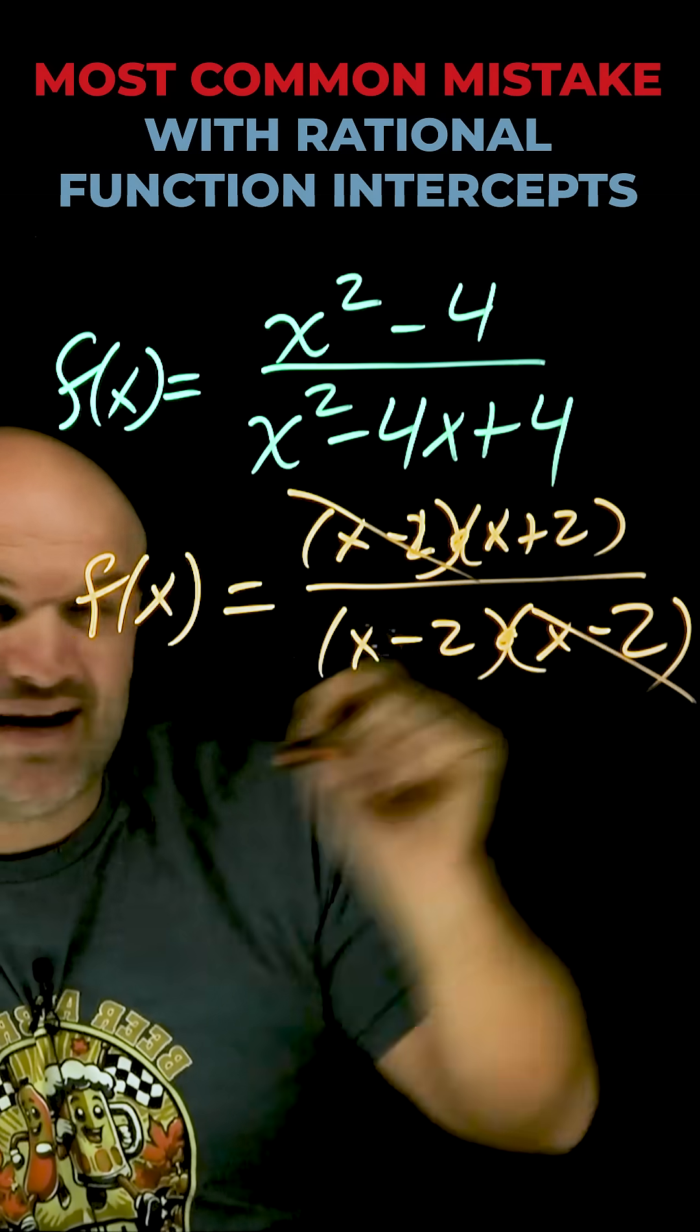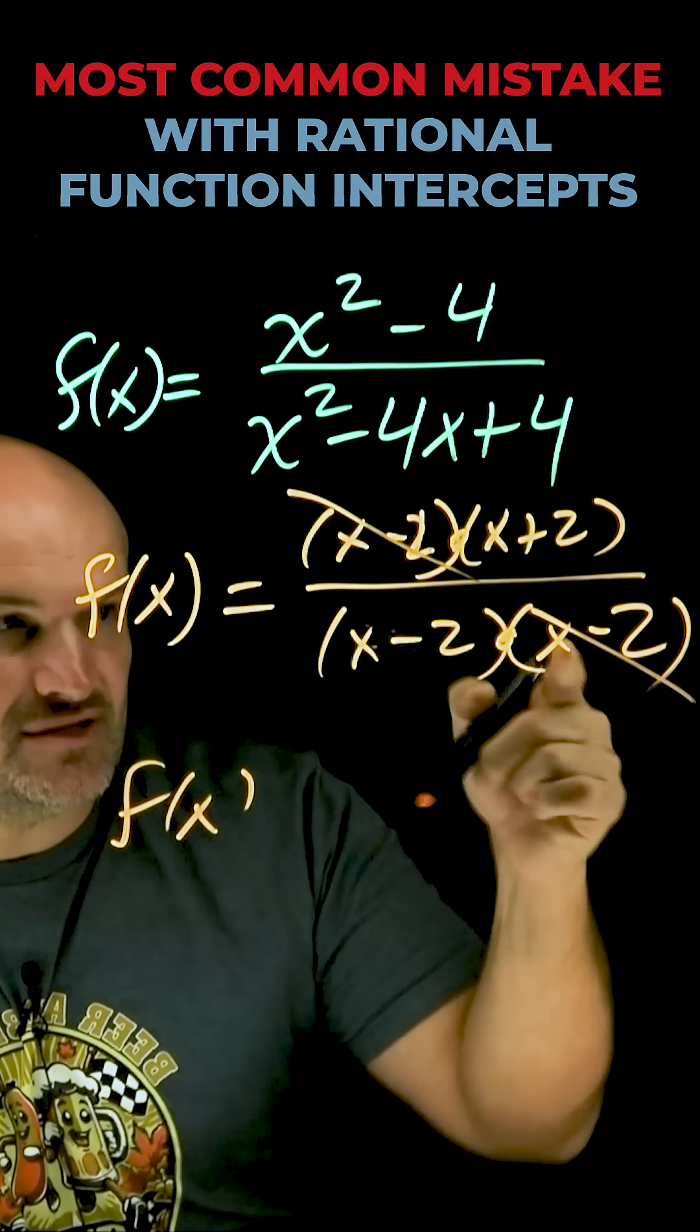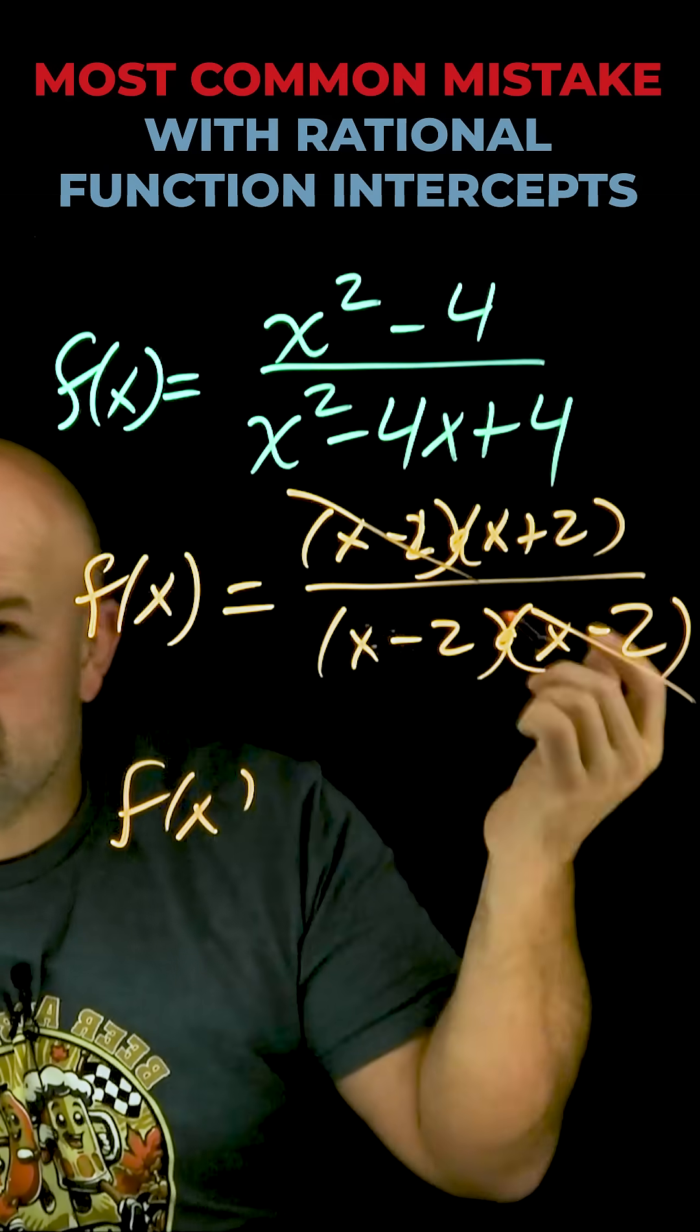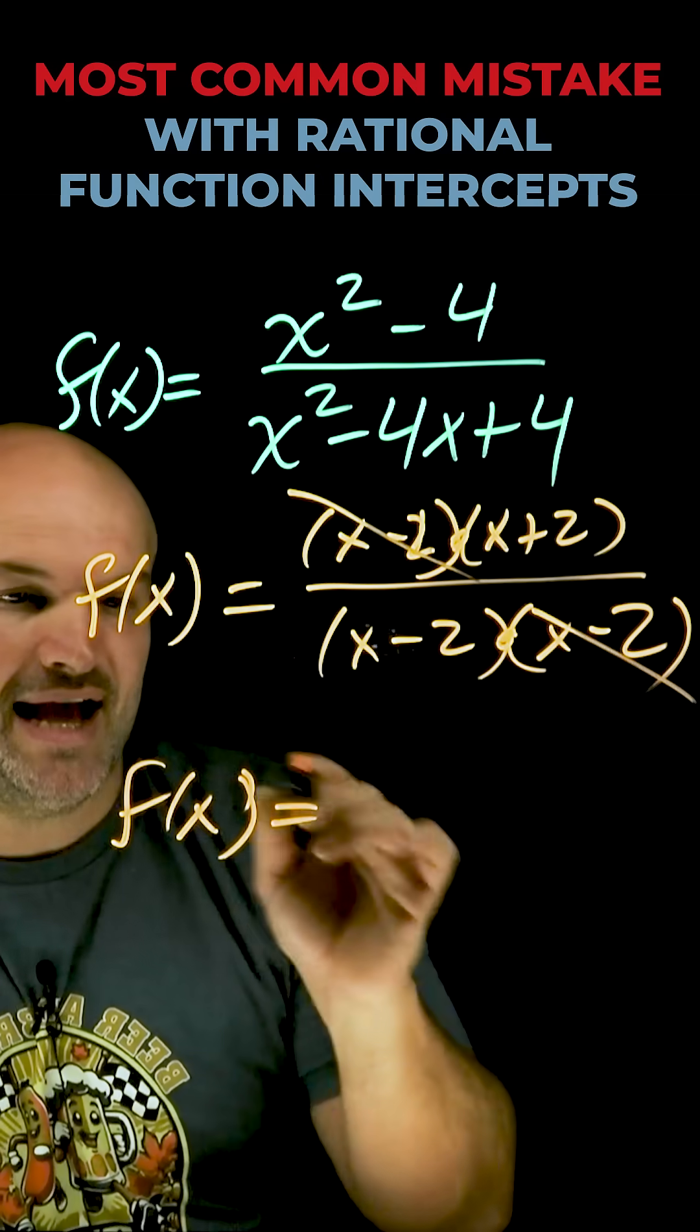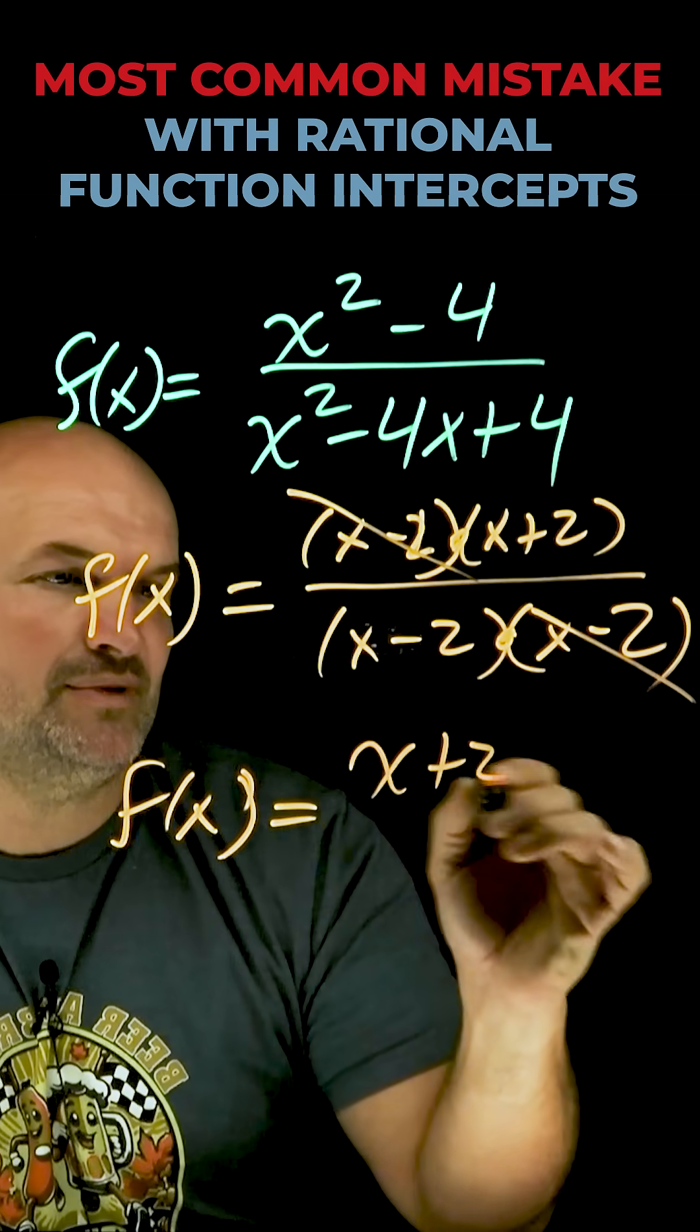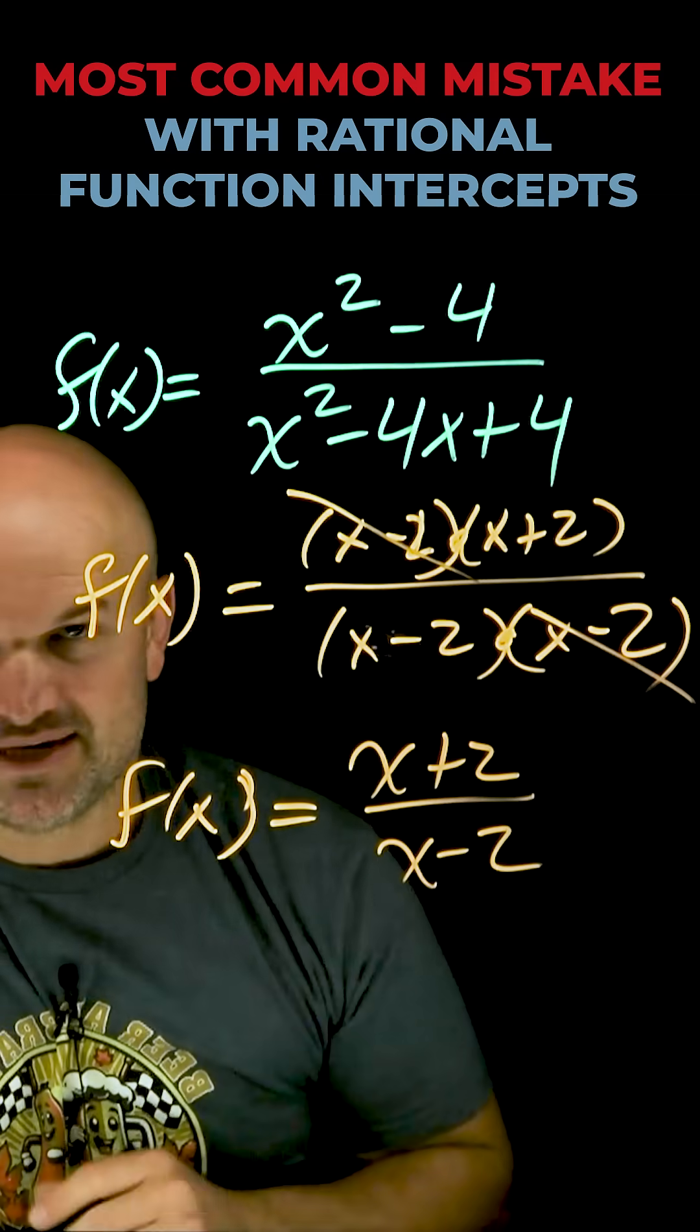What is the value that's not defined when x is equal to 2? Because 2 makes that 0, makes everything 0, and we know we can't divide by 0. So now let's rewrite our rational function as f(x) in simplified form, which is going to be x+2 divided by x-2.